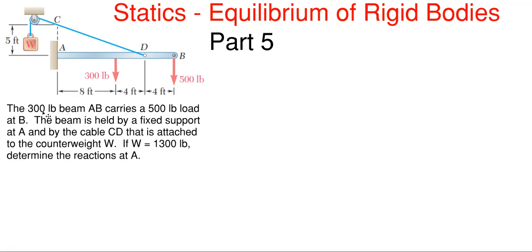What we have going on here is that we have a 300 pound beam AB that carries a 500 pound load at B. The beam is held by a fixed support at A and by cable CD that is attached to the counterweight W. If W equals 1300 pounds, determine the reactions at A. We already have the weight of the beam shown here, the 500 pound load at B shown here.